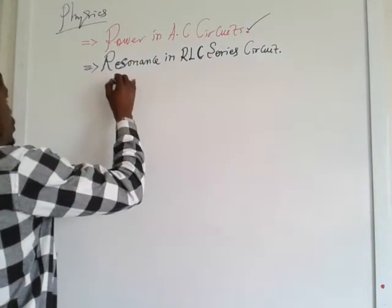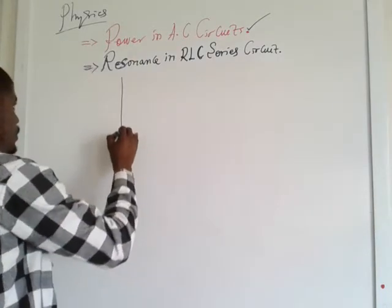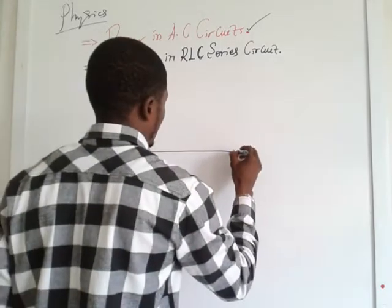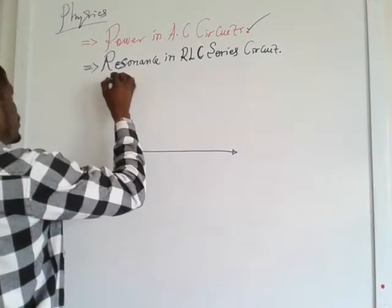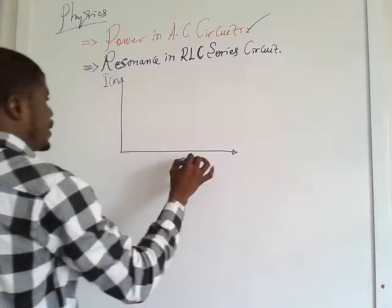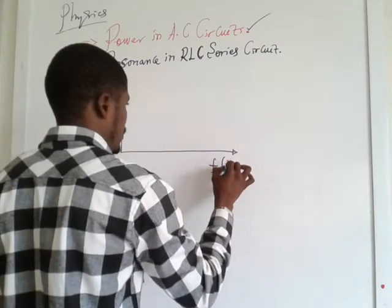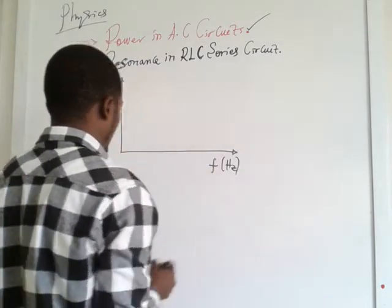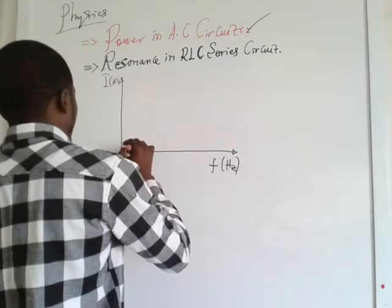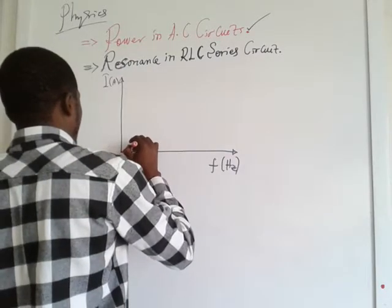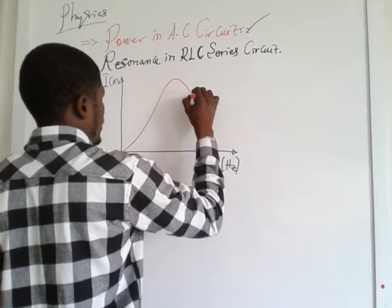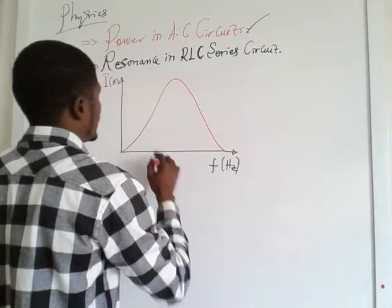Let's draw something here quickly. This is a graph of current I in amperes against frequency, with the current axis going up and the frequency axis going across.